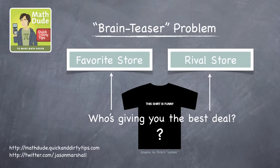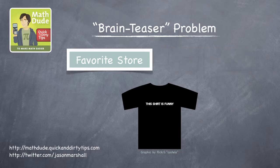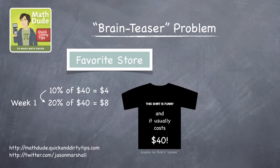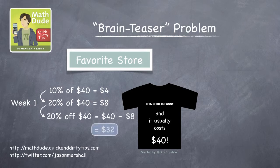Is one store giving you a better deal than the other? To figure this out, let's imagine the original price of the shirt is $40. So what's the on-sale price from your favorite store? Well, for the first week's 20% discount, 10% of $40 is $4, so 20% of $40 is $8, and therefore 20% off of $40 must be $40 minus $8, or $32.